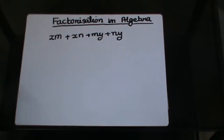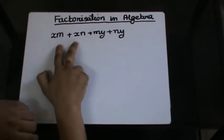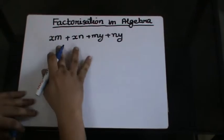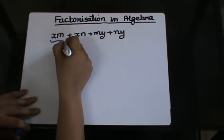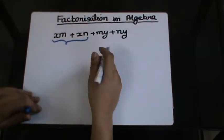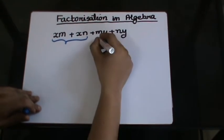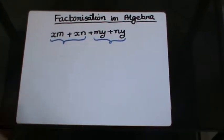Let's decide the groups here. I see that x is common in both of these terms, so I can have this as a group. And y is common in these two, so I can have this as a group.